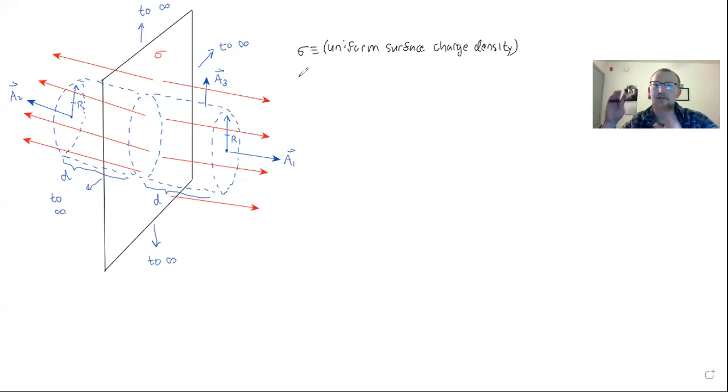is going to be uniform. In other words, it's a constant for every bit of area throughout the whole plane. So we know that Gauss's law tells us that the electric flux through an enclosed surface is equal to the sum of all charges enclosed in that surface divided by the permittivity of free space.